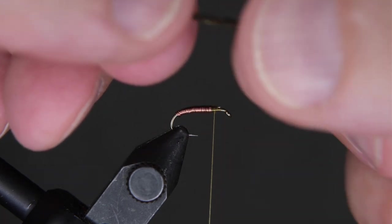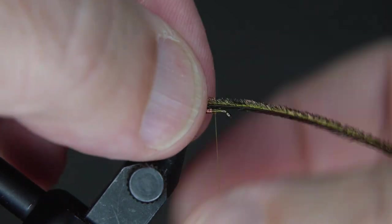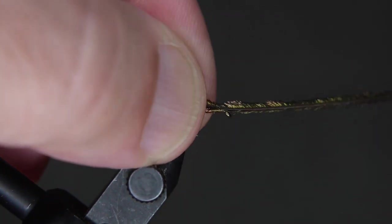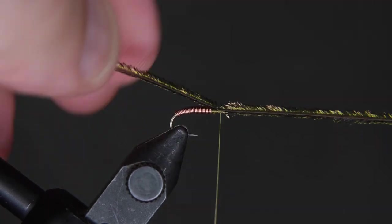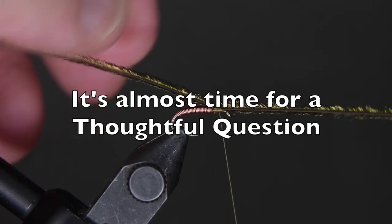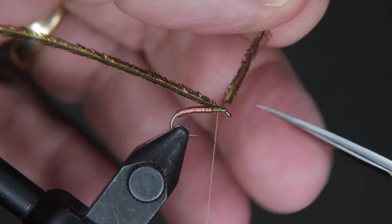Lay it right down on top of your hook. You want to make sure you have enough as we wrap forward. But this is a pretty small, quick wrap. So you don't need a whole lot. But just secure that down and bring the thread back to the very front after you clip this off.